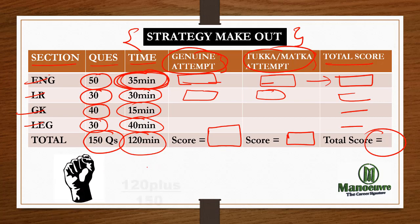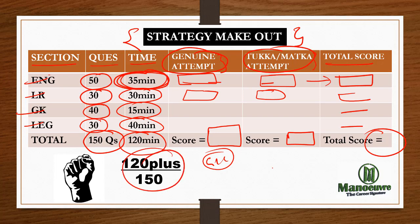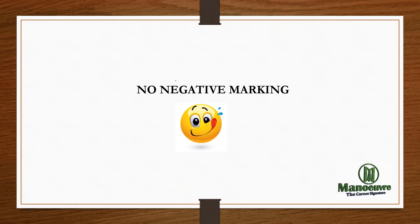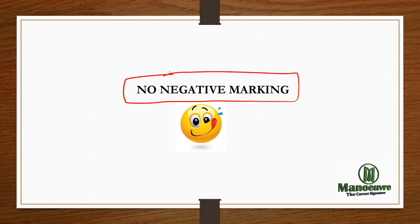If you want to get into GLC, you have to score 120 plus marks out of 150. If you are scoring 100 marks in your mock test, just call me and I will tell you how to reach 120. But before that, you should touch at least 100. Very importantly, there is no negative marking in the CT exam, so make sure you attempt all the questions without fail.